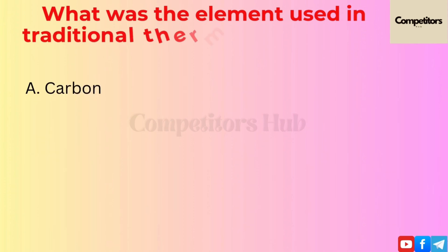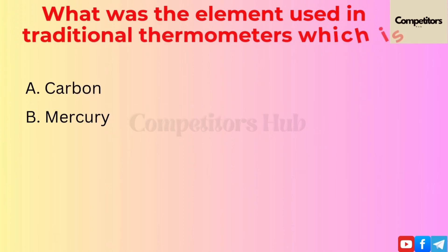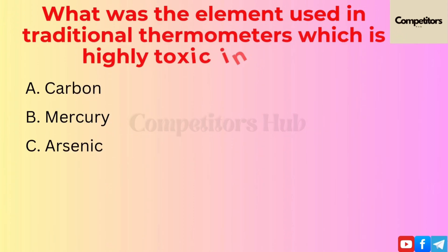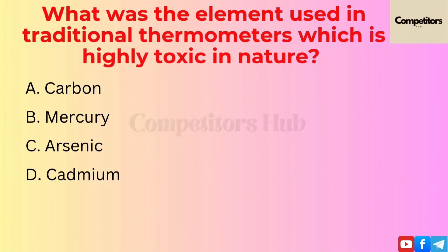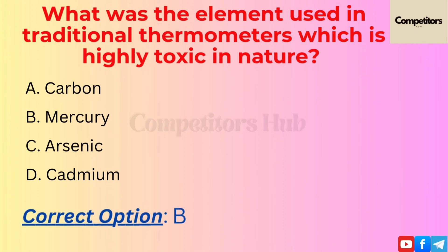The next question is: what was the element used in traditional thermometers which is highly toxic in nature? Option A: Carbon. Option B: Mercury. Option C: Arsenic. Option D: Cadmium. The correct option is B, Mercury.